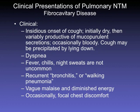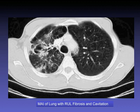For the fibrocavitary patient — typically a COPD patient with chronic lung disease — clinical syndromes include insidious onset of cough, mucopurulent secretions occasionally bloody, dyspnea, fever, chills, night sweats, recurrent bronchitis or walking pneumonia, vague malaise or diminished energy, and focal chest discomfort. This is a syndrome we all know intuitively. A COPD patient with typical cavities and fibrosis on CT represents fibrocavitary MAC disease — whether to treat depends on multiple factors.